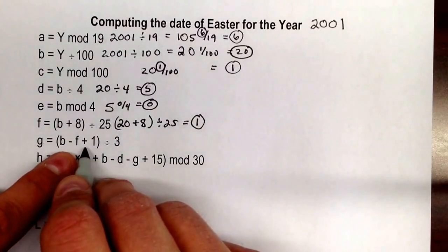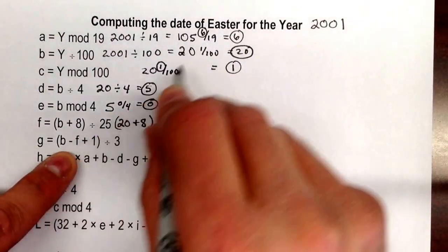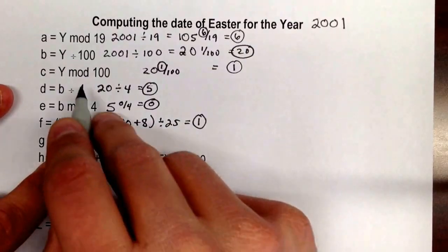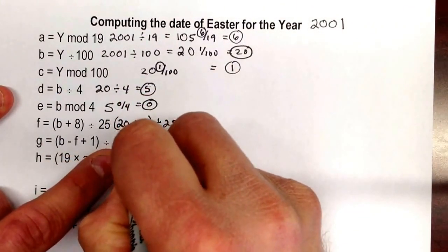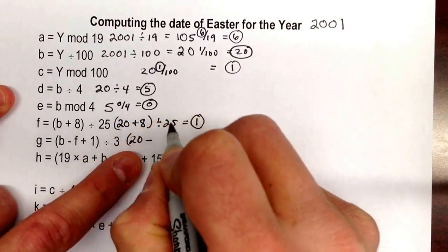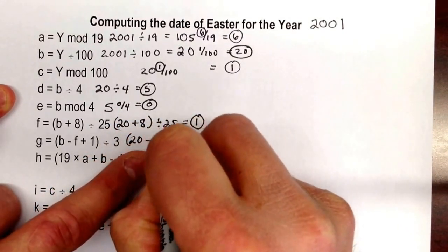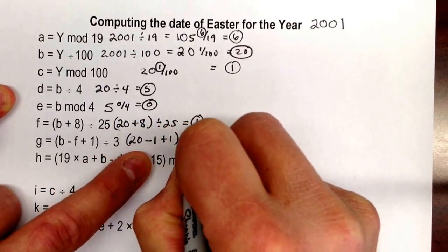And then g, a little bit more, notice how we're going to keep referring back here as we go further down too. For g, g is going to be b, which is 20, minus f, which we just found, 1 plus 1 divided by 3.